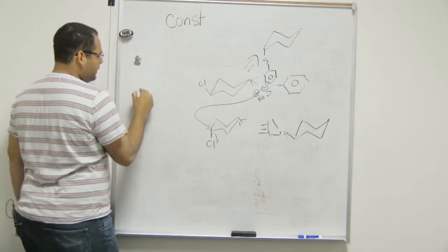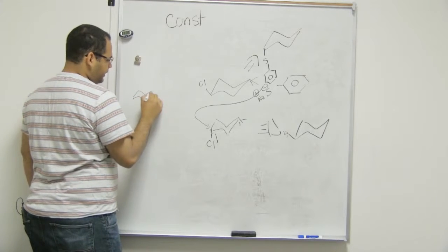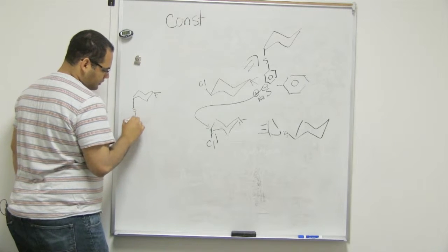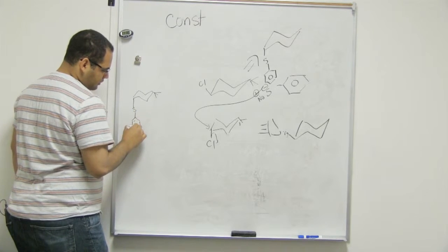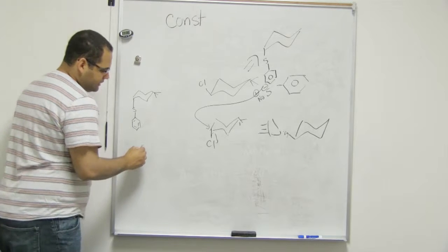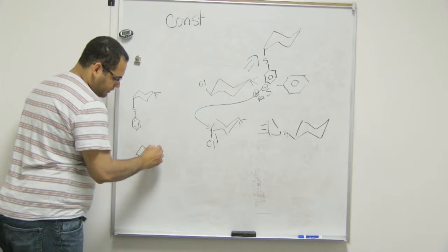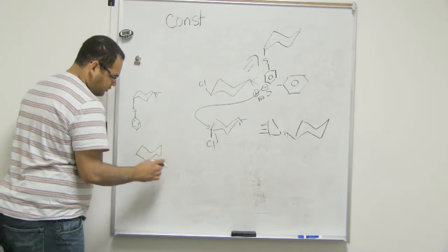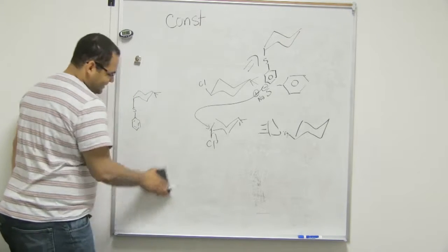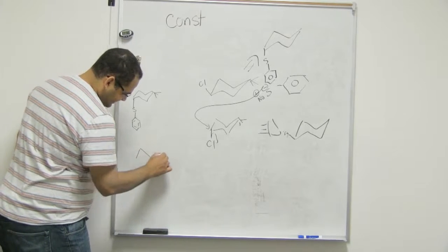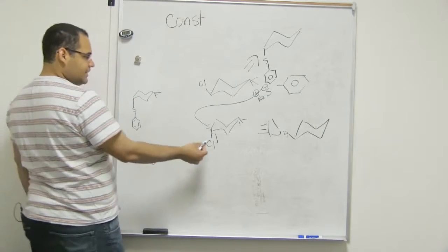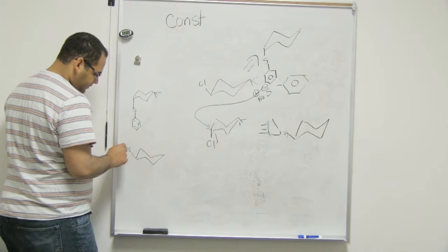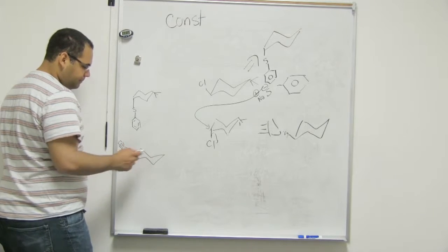So this is A. This is the final product. And this is the second product. This is not a chair at all. A chair. Because this guy was down, now it comes to the equatorial position. Right? Yeah.